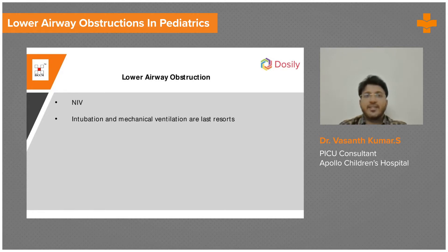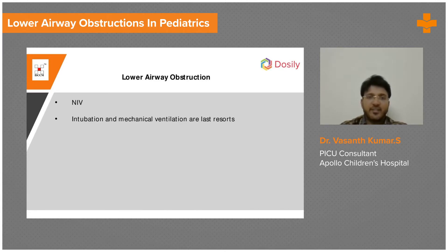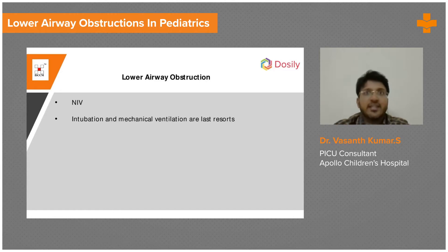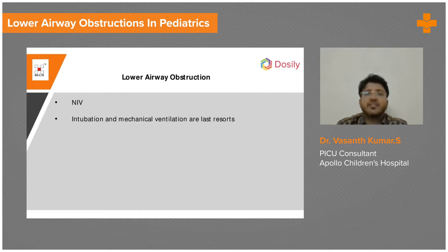Lower airway obstruction is usually a problem with resistance. Because there is a resistance problem, such patients — for example, asthma — you don't want to ventilate them, because the ET tube is a foreign body which can trigger bronchospasm. Plus there are a lot of difficulties in ventilation. So you try maximum to manage medically: non-invasive ventilator, CPAP, BiPAP, or even high flow nasal cannula. Intubation and ventilation will usually be the last resort.